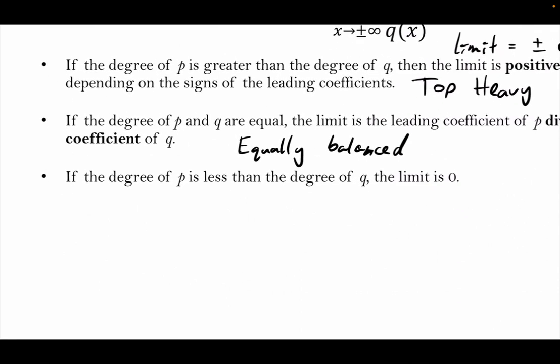Last bullet point: if the degree of P is smaller — that's when it's easy. The limit is always zero. This is when it's bottom-heavy. If the degree on the bottom is bigger than the degree on top, the answer is always zero.